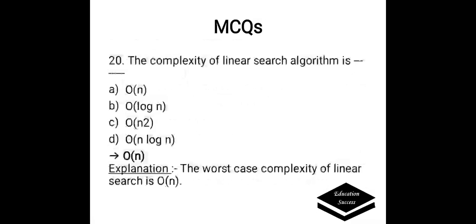The complexity of linear search algorithm is: a) O(n), b) O(log n), c) O(n²), or d) O(n log n). Correct answer is O(n). The worst case complexity of linear search is O(n), because in the worst case we find the element at the last position of the list or not in the list at all.